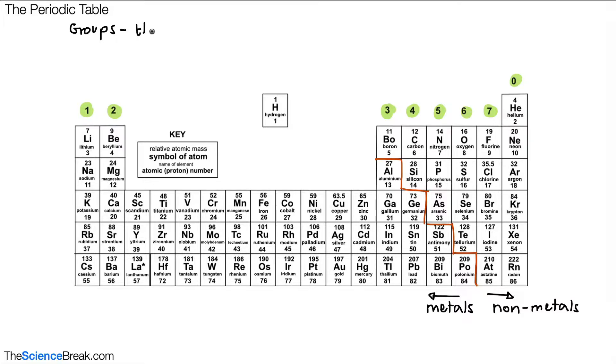Elements are put into groups because they have similar properties. Elements with similar properties are placed in specific groups.